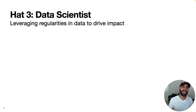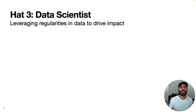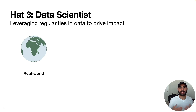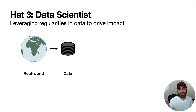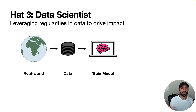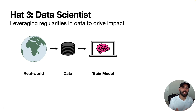Next, hat three: the data scientist. My definition of a data scientist is someone who leverages regularities in data to drive impact. Since computers are much better than us at finding patterns in data, this often boils down to training a machine learning model. You start with the real world — things you care about — collect data, and use that data to train a model. The model can then make predictions, such as the probability someone will buy your product or won't repay their credit card bill. There are countless applications of machine learning models.